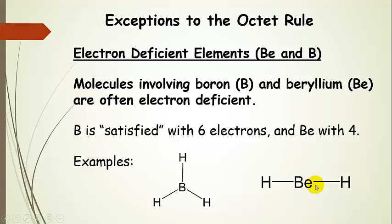Beryllium can be satisfied with four. You can see that we have beryllium hydride, and this molecule is satisfied - this beryllium atom is satisfied with four valence electrons surrounding it.